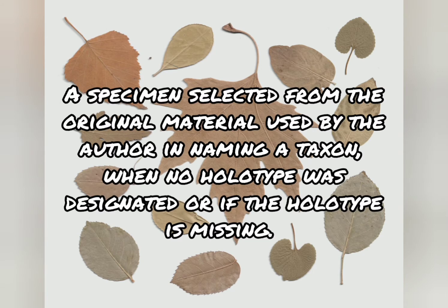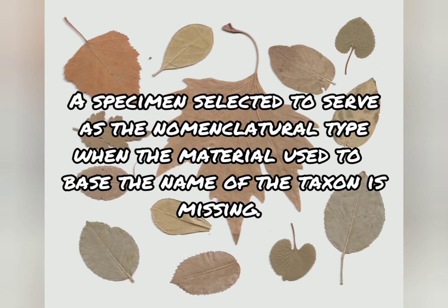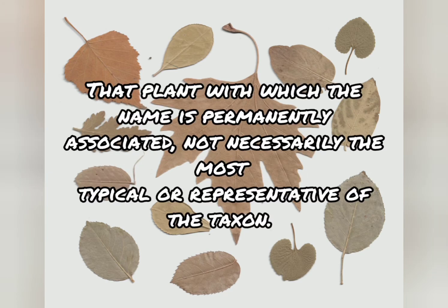Electotype is a specimen selected from the original material used by the author in naming a taxon, when no holotype was designated or if the holotype is missing. A neotype is a specimen selected to serve as the nomenclatural type when the material used to base the name of the taxon is missing. A nomenclatural type is that plant with which the name is permanently associated, not necessarily the most typical or representative of the taxon.